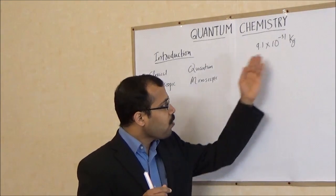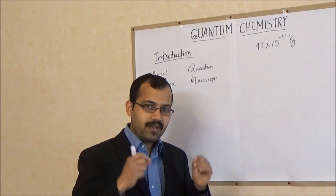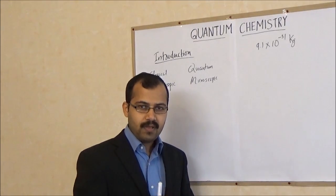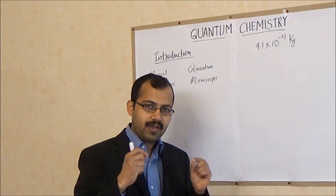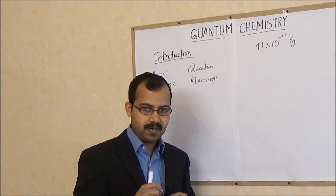So you can imagine how tiny is an electron. How small is this mass? So electron is a very, very, very, very tiny particle which has a very, very, very, very small mass. So this is a microscopic particle.